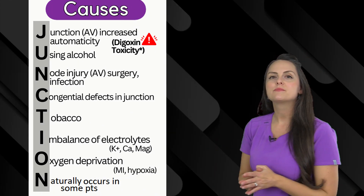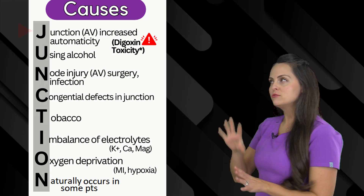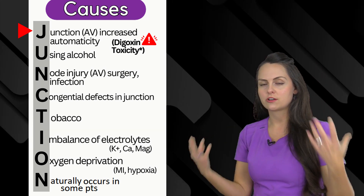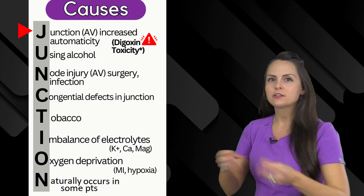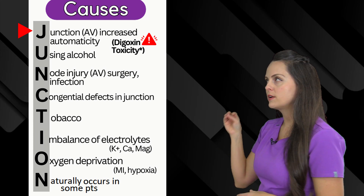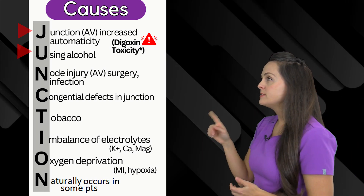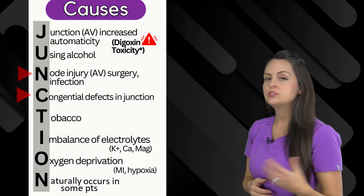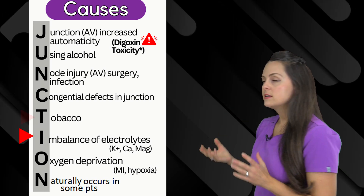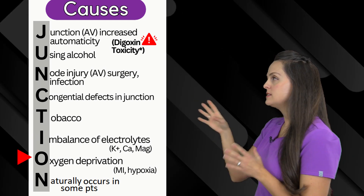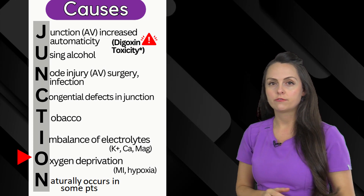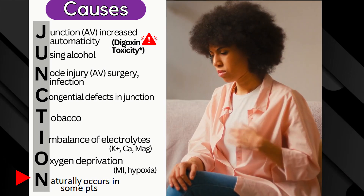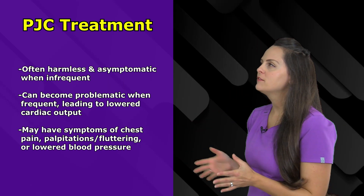What are the causes of PJCs? Remember this mnemonic I created: JUNCTION. J is for junction — the AV junction has increased automaticity, which can occur from digoxin toxicity, one of the most common causes. U is for using alcohol. N is for node injury — the AV node is damaged due to surgery or infection. C is for congenital defects in that junction. T is for tobacco use. I is for imbalance of electrolytes like potassium, calcium, or magnesium. O is for oxygen deprivation, which could occur from myocardial infarction, limited blood flow, or hypoxia. And N is for naturally occurring in some patients.